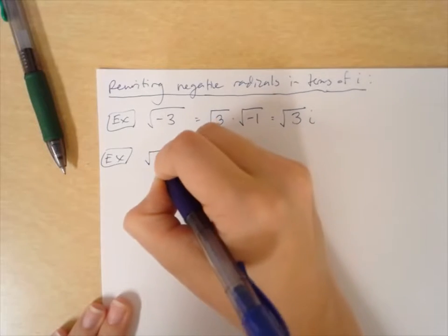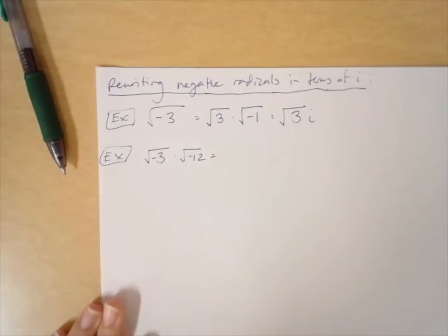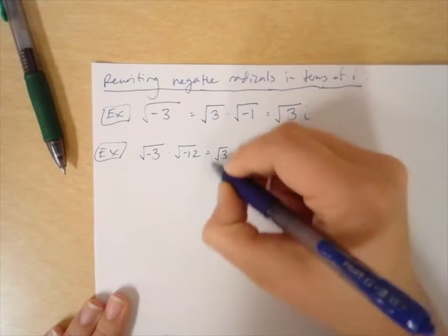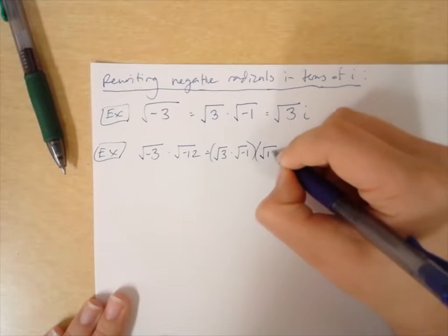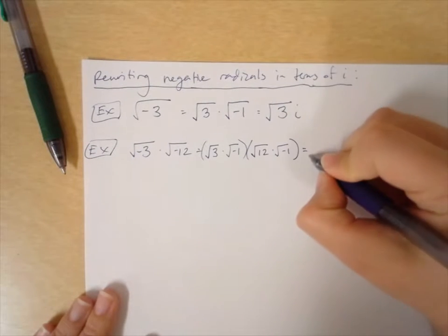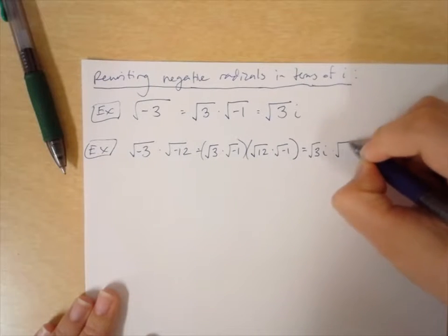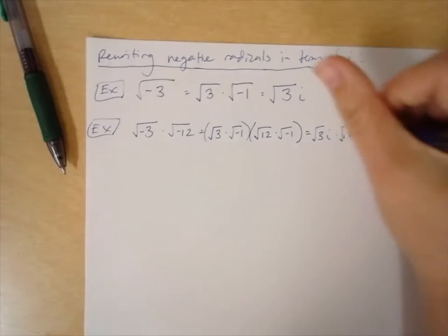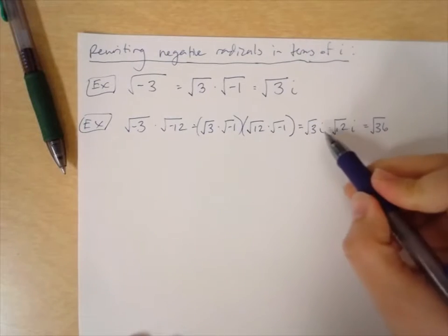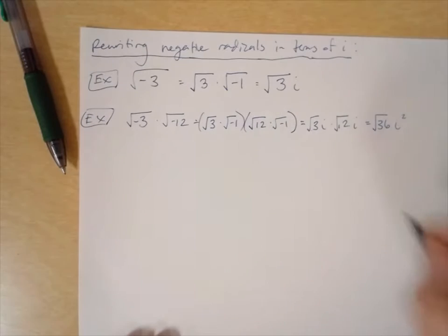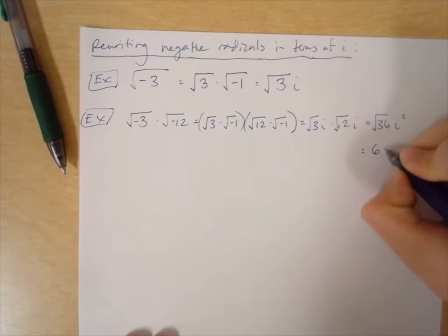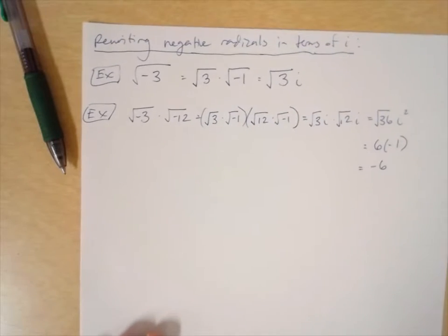If I had the square root of negative 3 times the square root of negative 12, I can rewrite each as the square root of 3 times i, and the square root of 12 times i. Then I can say 3 times 12 gives the square root of 36, and i times i is i squared. The square root of 36 is 6, and i squared is negative 1, so I get negative 6 as my answer.